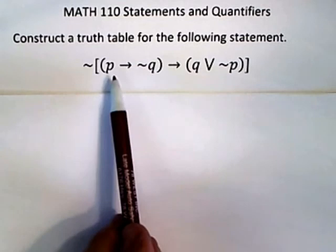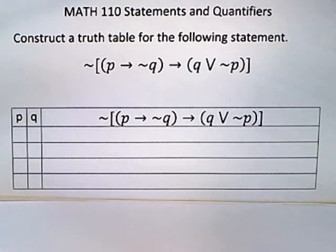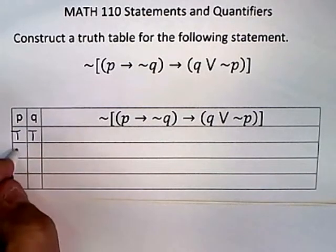It only has two different statements, P and Q, so your truth table for this problem is going to have four possibilities. And they are, as you know by now, I think, they could both be true.